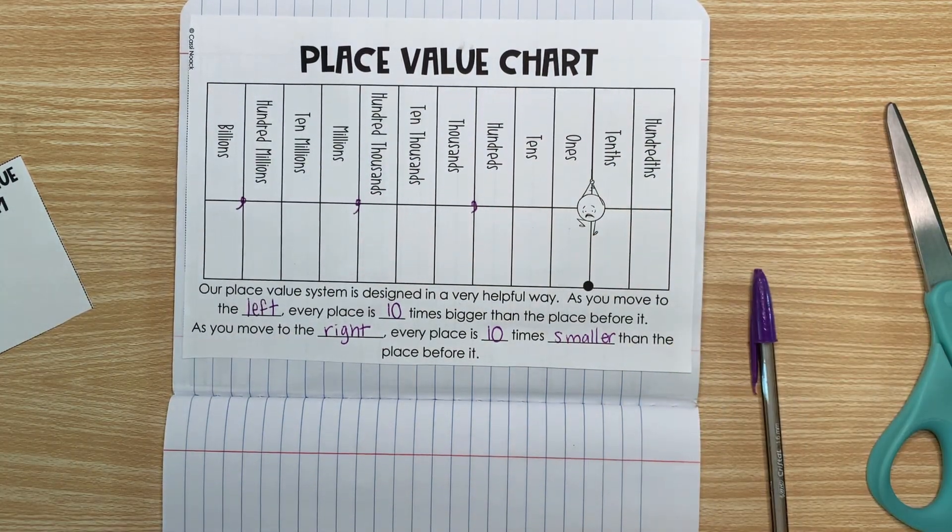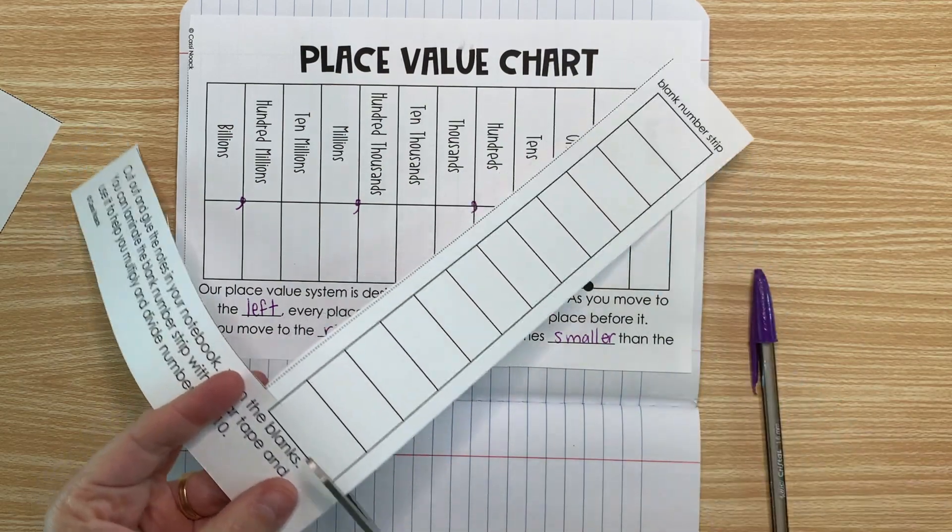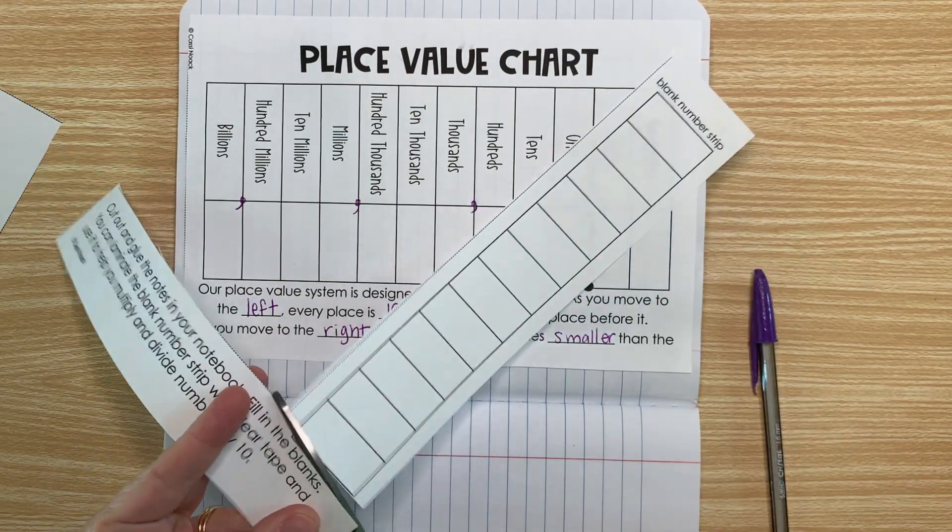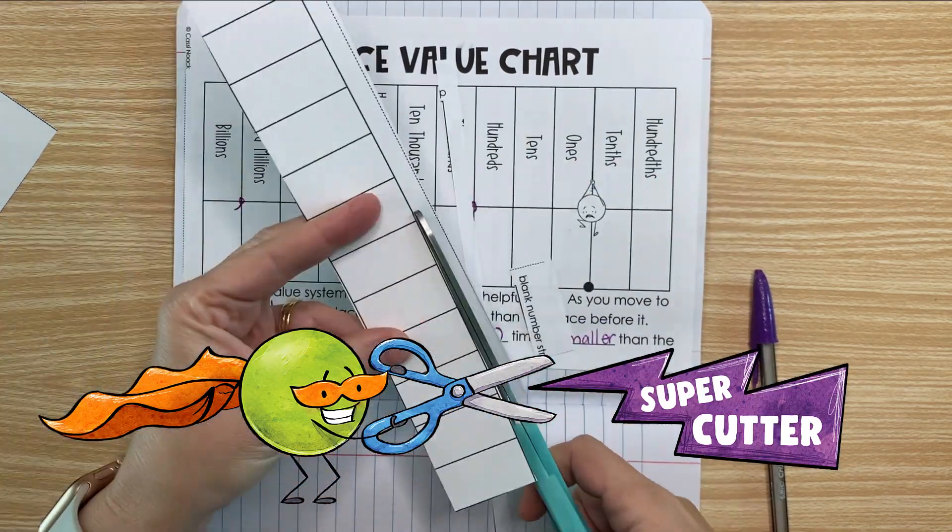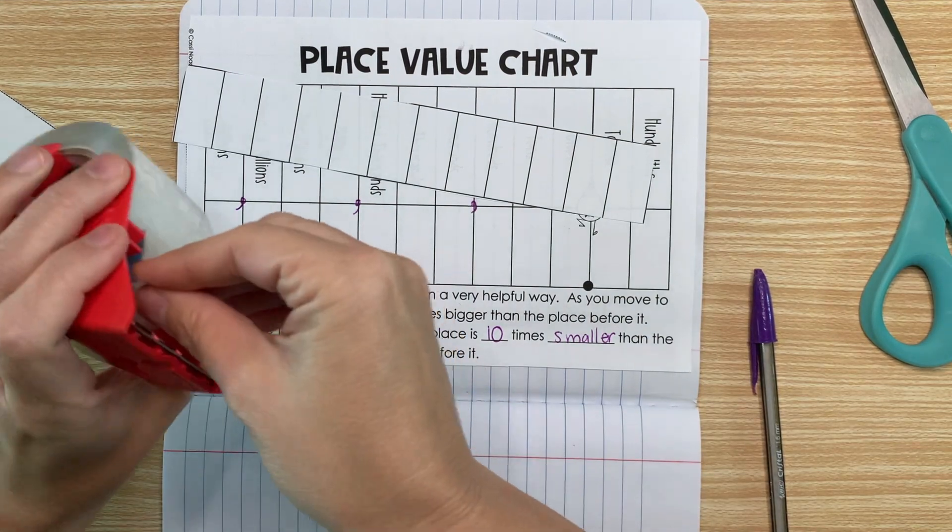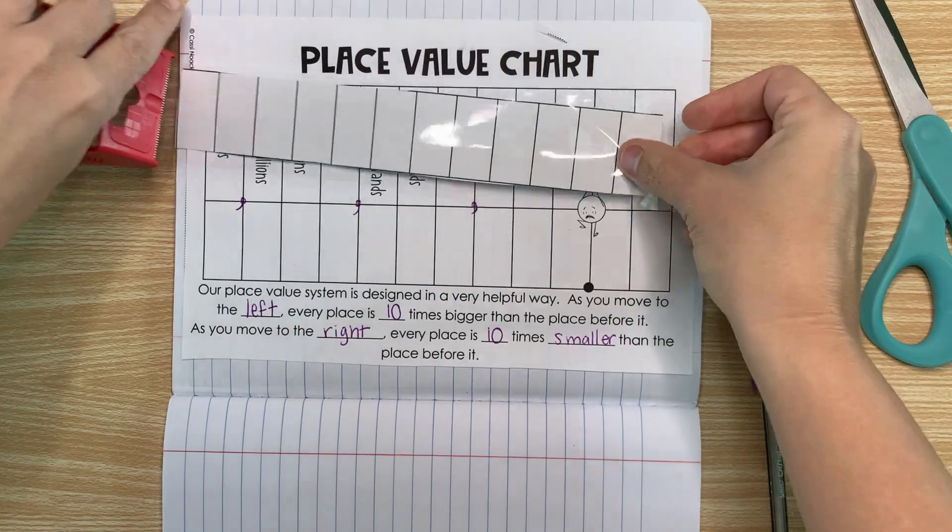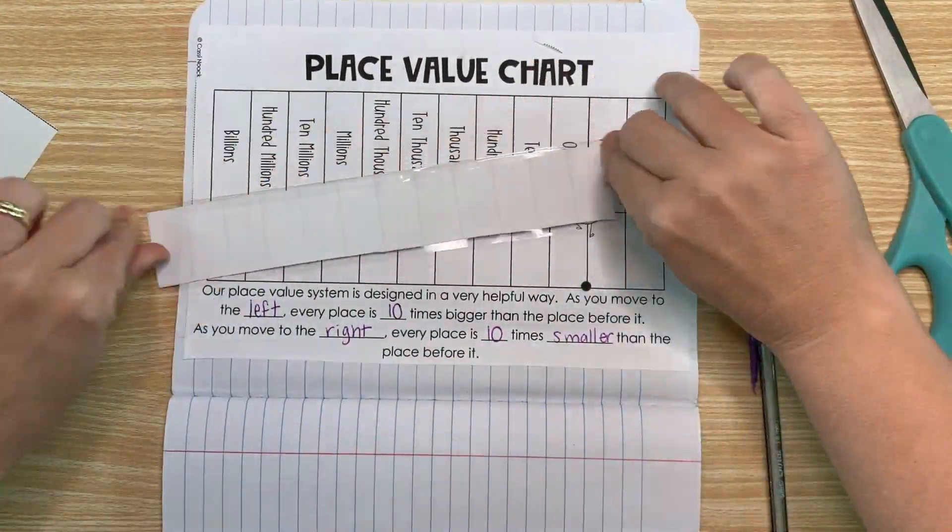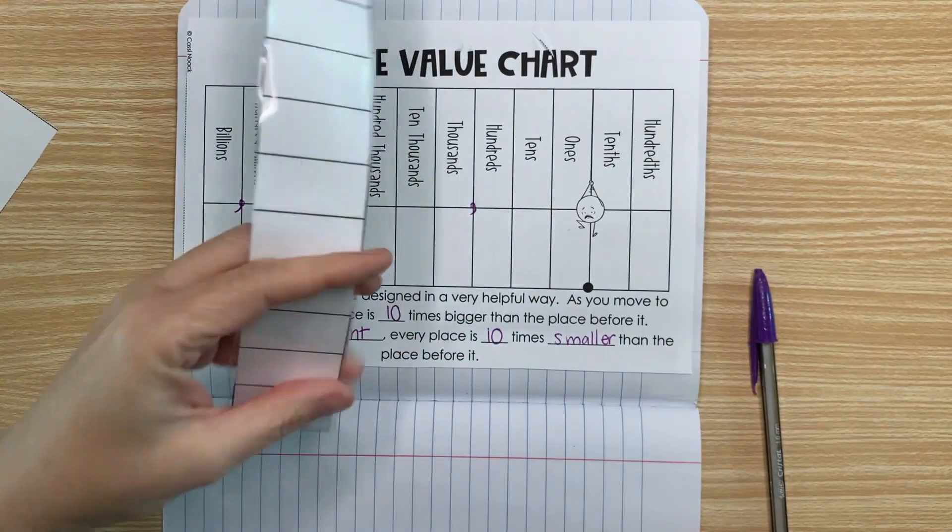So now the rest of the page that we almost threw away actually has a blank number strip on it. So go ahead and cut that out. Now I'm going to use a piece of packing tape to make it reusable.